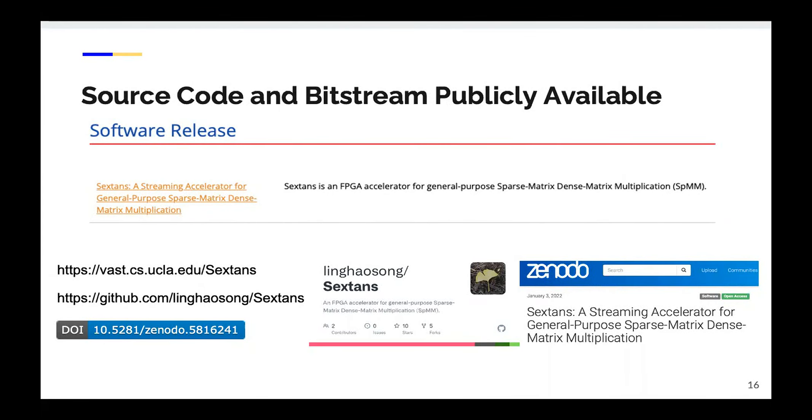We released the source code on UCLA VAST software release site, GitHub, and Zenodo. We also provide the accelerator bitstreams for fast FPGA execution. Currently, we provided two versions of Sextense, one for U280 HBM FPGA, and the other for U250 DDR FPGA. Check it out if you are interested. Thanks for your attention.